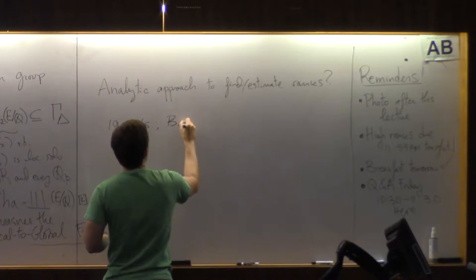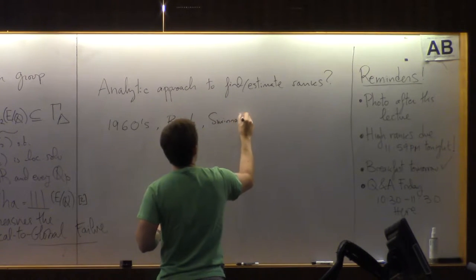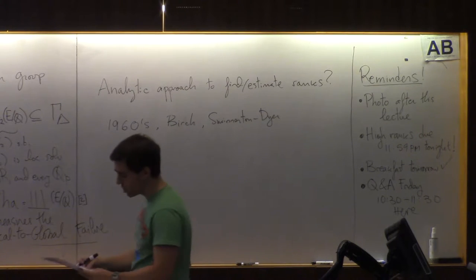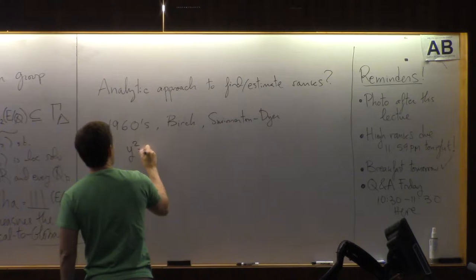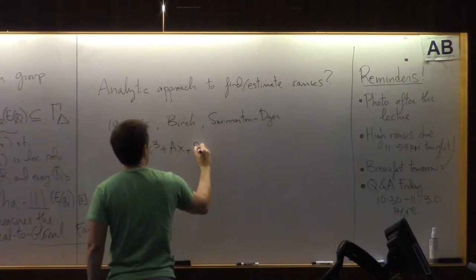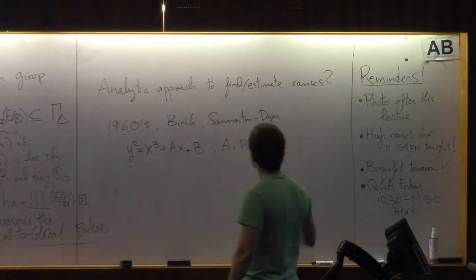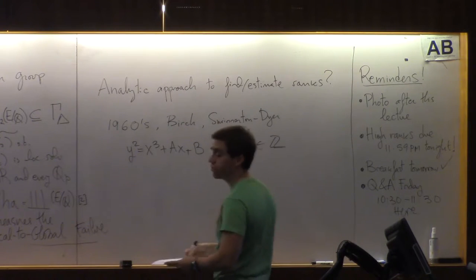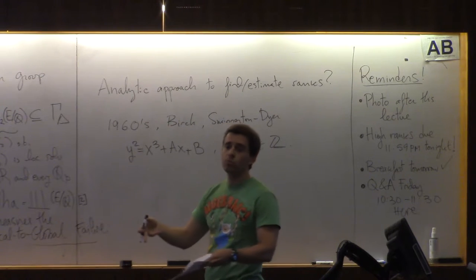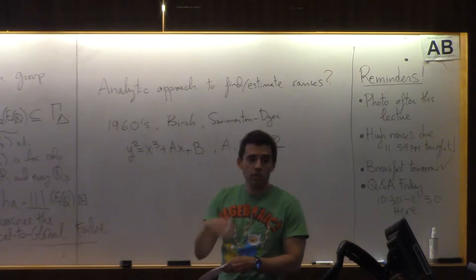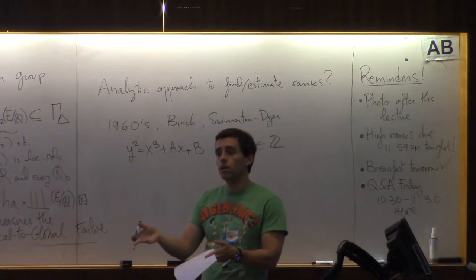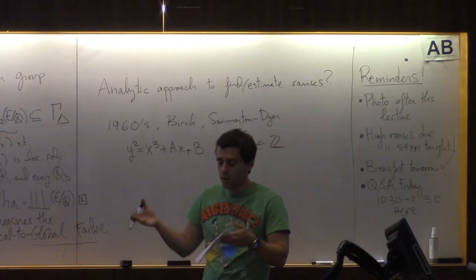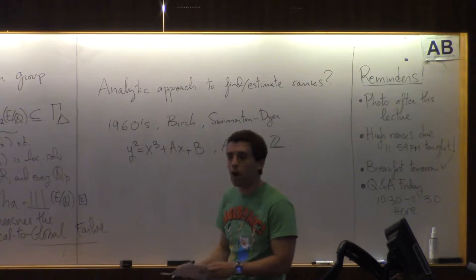So Birch and Swinnerton-Dyer had the following idea, which is that if I have an elliptic curve, and if this elliptic curve has high rank, I can try to see those. I don't know how to find them, but if I reduce modulo p, I go to a finite field, and then there's only finitely many numbers to play with, but if there are points of infinite order, many of those should reduce, and I should see many points of finite order also. With finite order, I can just do a finite computation and find all the points and see how many there are over there.